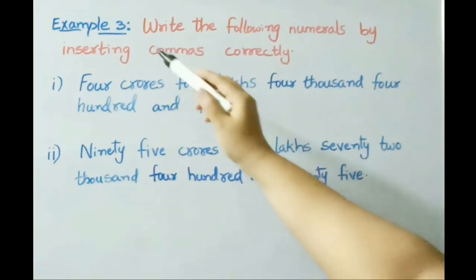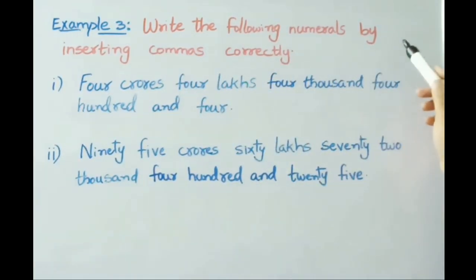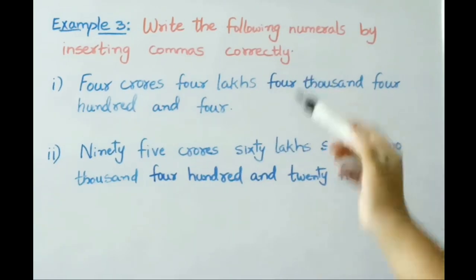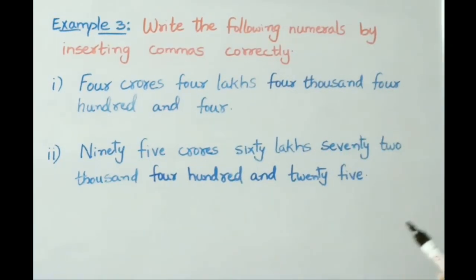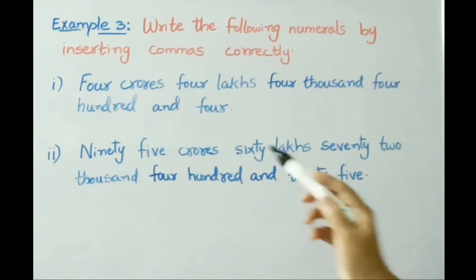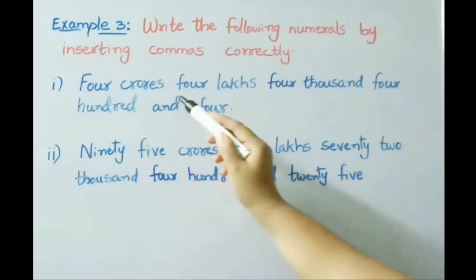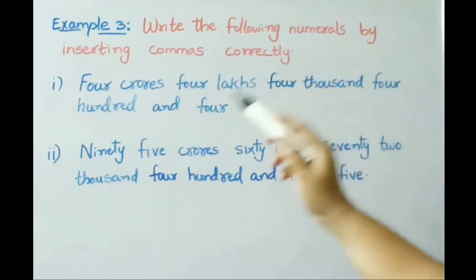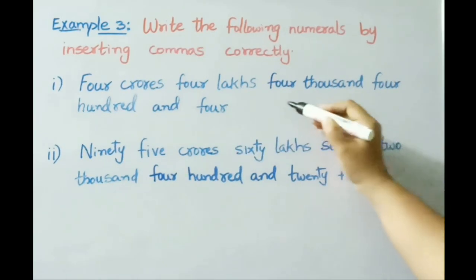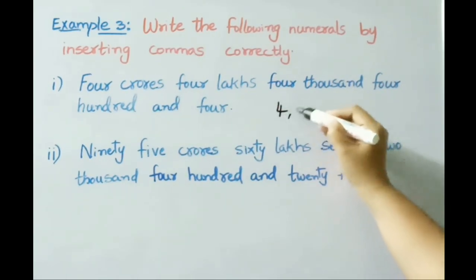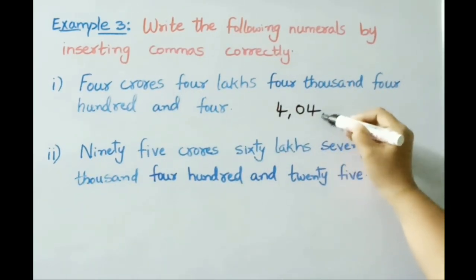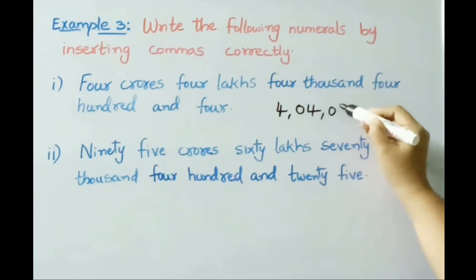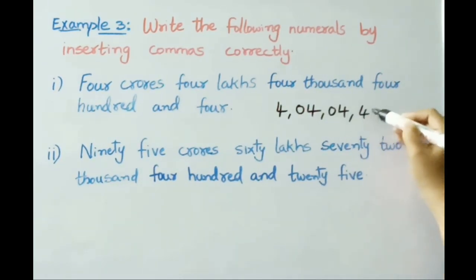See the third sum now, Example 3: write the following numerals by inserting commas correctly. Here number names are given and we need to write the numerals separated by commas. Read the number name: 4 crores, 4 lakhs, 4 thousand, four hundred and four.